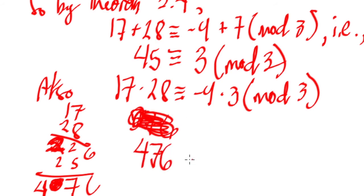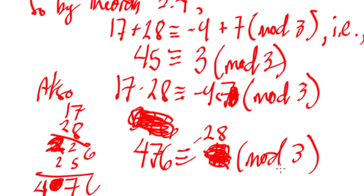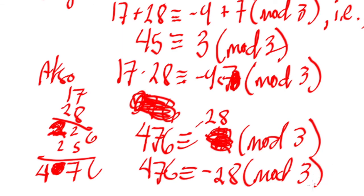So 476 is congruent to negative 28 mod 3. You can check if it's really true. That's it — I think that's enough for this video. Thank you very much for watching. I hope you like and click subscribe. Thank you very much.